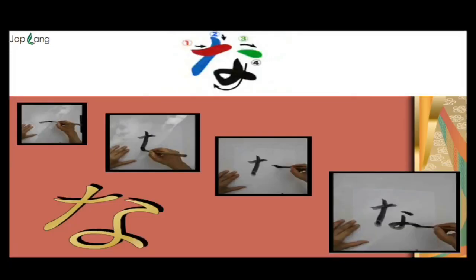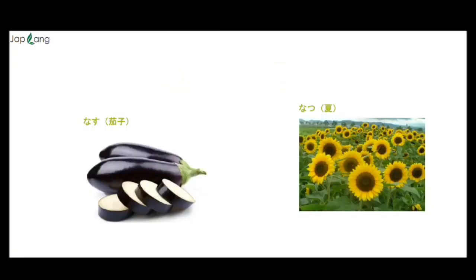How do we write NA? The red color is your first stroke, second is blue, third is green, and fourth is black. This is how we write NA. NA as in Natsu — Natsu means summer. Natsu also relates to brinjal.